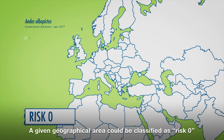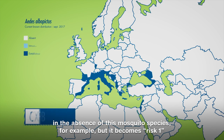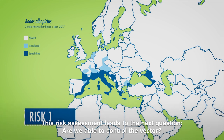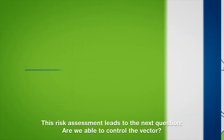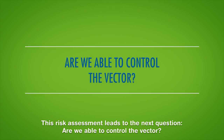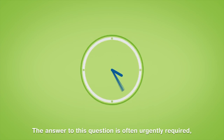but it becomes risk one if the mosquito is present. This risk assessment leads to the next question: are we able to control the vector? The answer to this question is often urgently required, especially during an epidemic.